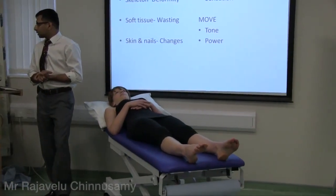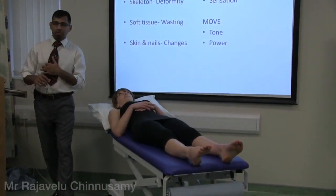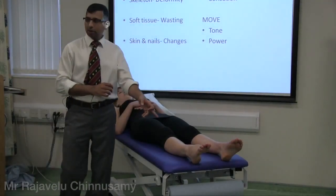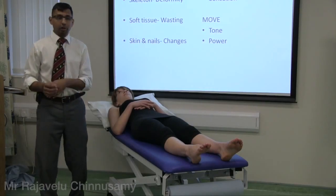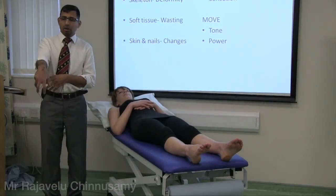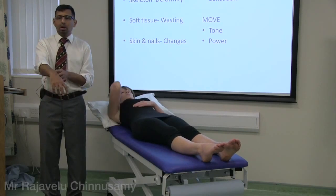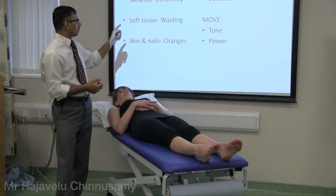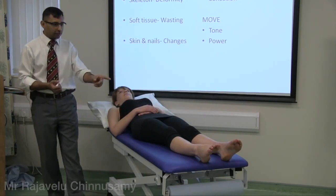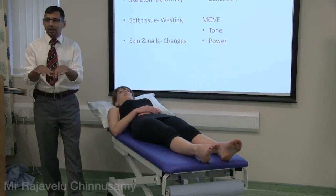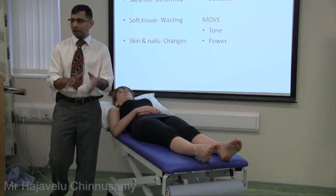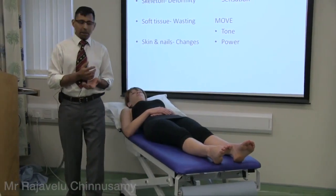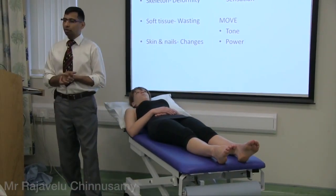For the main neurology in any spine examination, it's again look, feel, and move. Look for any wasting, skeletal deformity - for example in the upper limb you might see wrist drop or ulnar clawing - and skin and nail changes. For feel, look for sensation. For movement, look for tone and power.